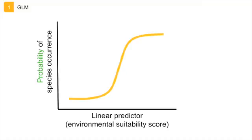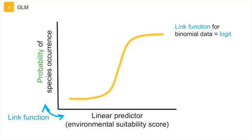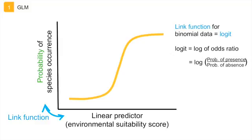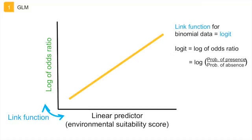Because the probability of species occurrence is based on binomial data that are not normally distributed, we need a function that links the response variable to the linear predictor. This is a so-called link function, and for binomial data, this is a logit function. With the logit function, we take the log of the odds ratio, which is the ratio of the probability of presence over the probability of absence. This link function transforms the y-axis to be able to fit a straight line between the response and the linear predictor. The formula that describes this line operates on the log odds scale, and has a constant baseline which refers to the log odds ratio that you get when you set all environmental variables to their mean values, and it is the intercept of the straight line with the y-axis. The effect of each environmental variable is included by multiplying the value of the variable with its coefficient, and this affects the slope of the line.